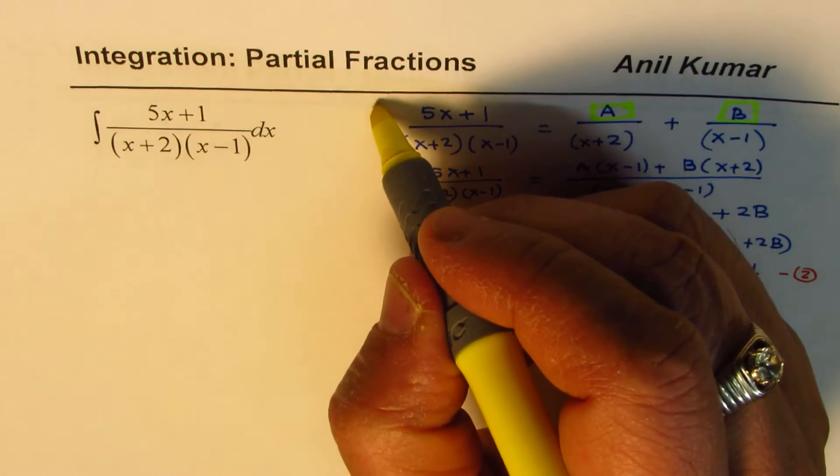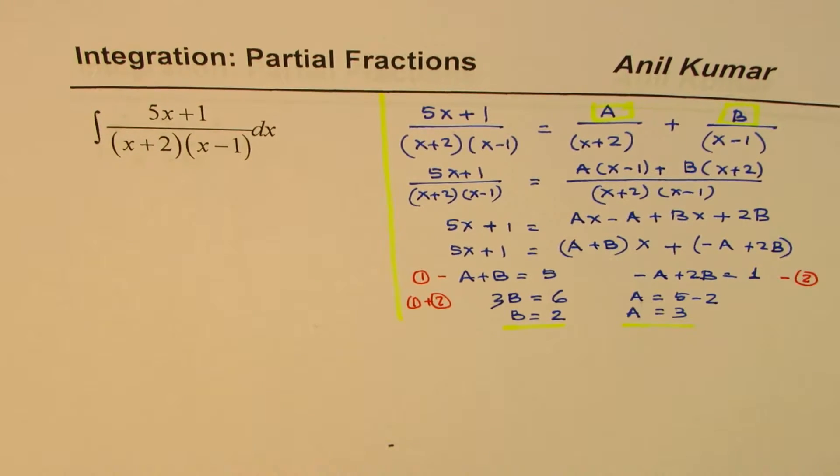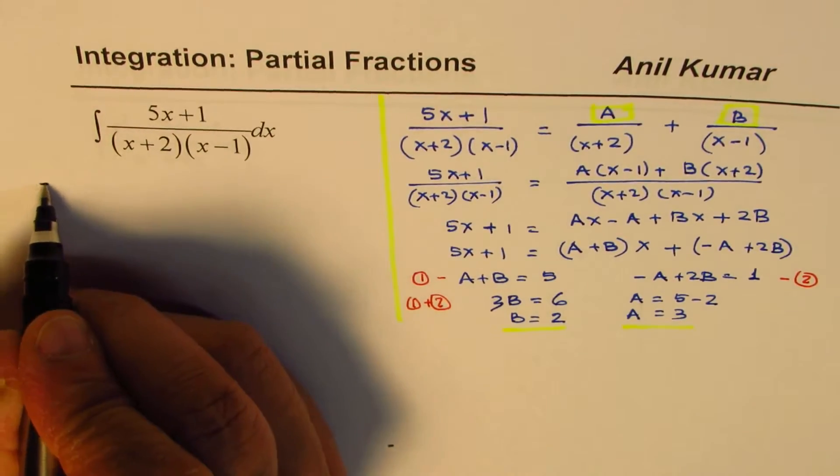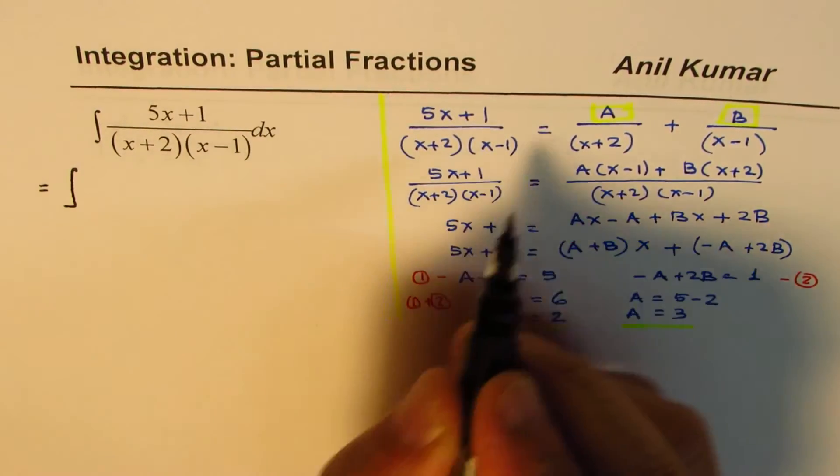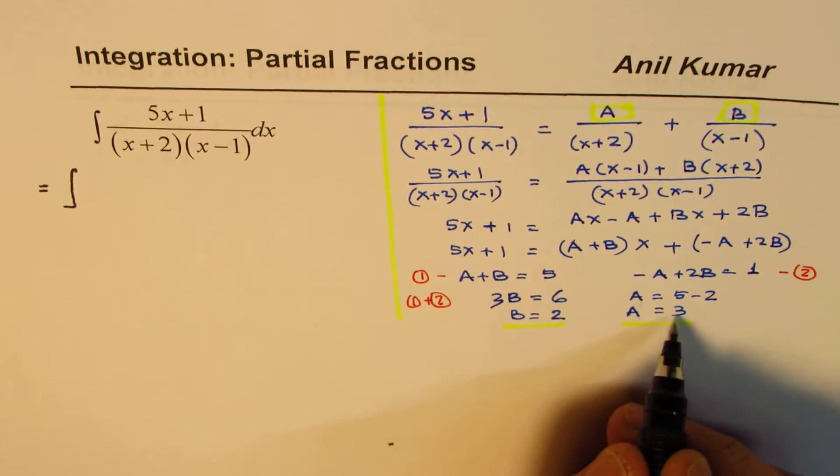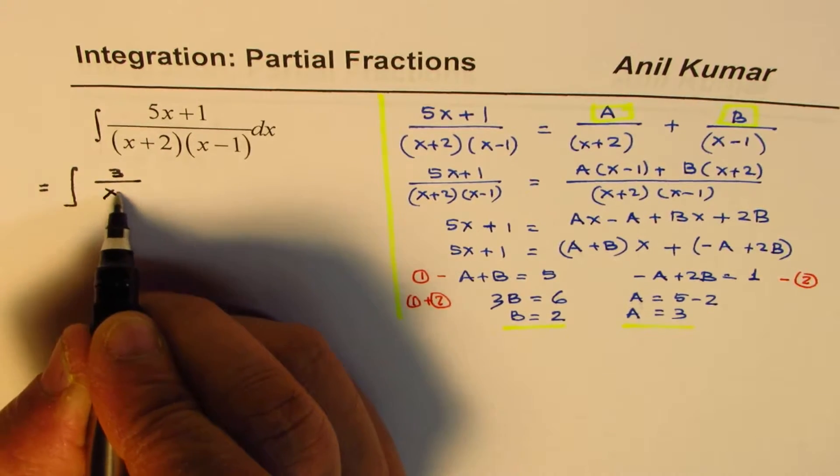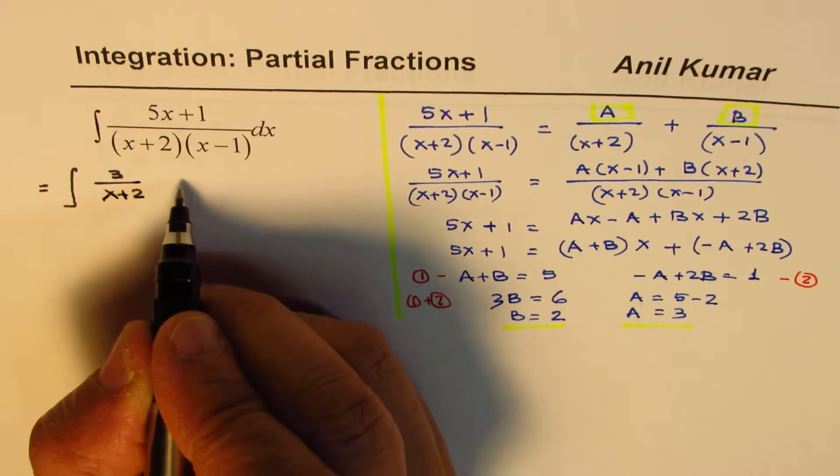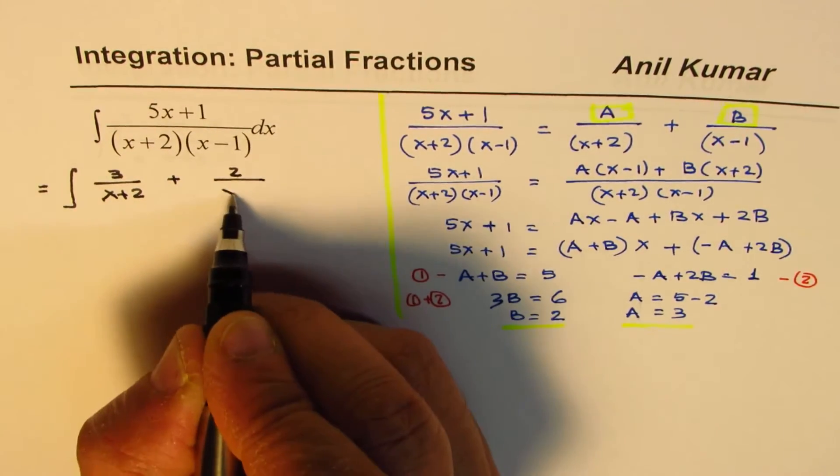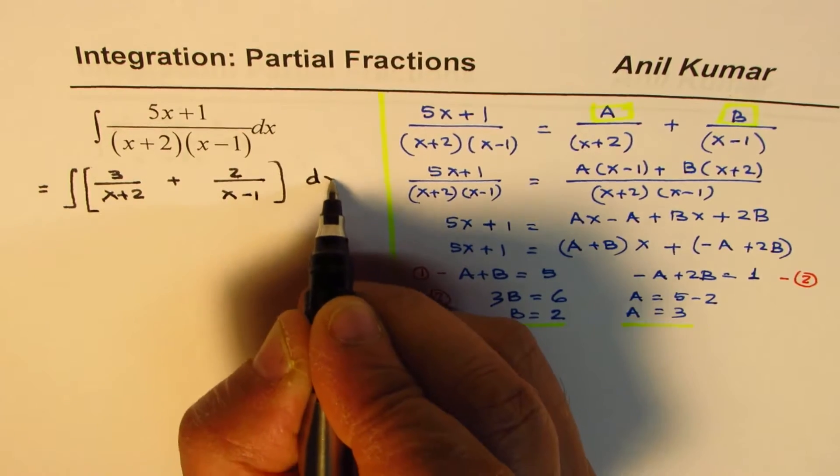That is what we normally do to find integral of such functions. So let's get back to the question now. So we could rewrite this integral as integral of a over, a is 3 for us. So 3 over x plus 2, 3 over x plus 2 plus b is 2 for us, plus 2 over x minus 1, dx.